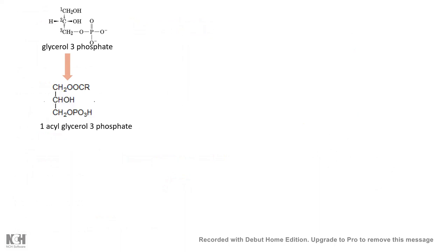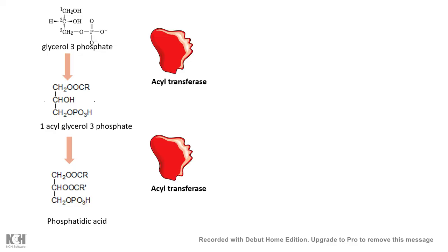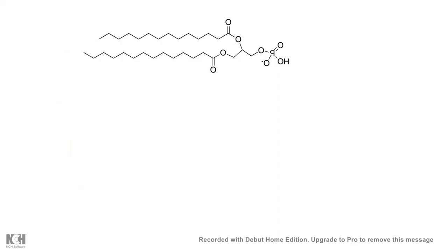Once glycerol-3-phosphate is generated, it can be converted to a 1-acyl-glycerol-3-phosphate — meaning an acyl group is added at the C1 position, derived from the free fatty acids present in the cytoplasm. Then there is sequential addition of another acyl group, which ultimately creates phosphatidic acid in the cytoplasm. All of these acyl group transfer reactions are carried out by acyltransferases, which are present in the smooth endoplasmic reticulum.